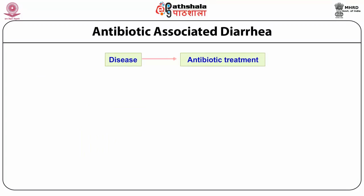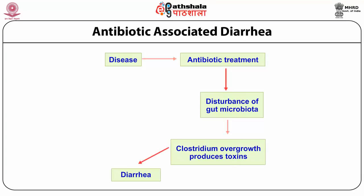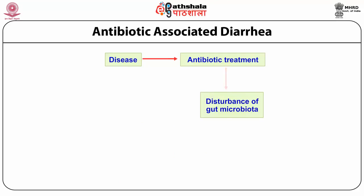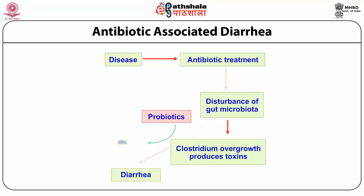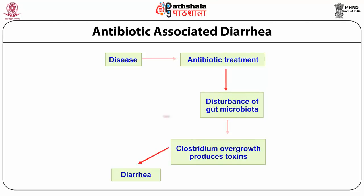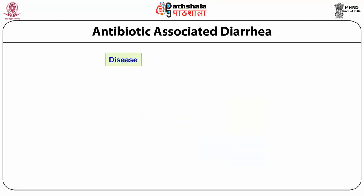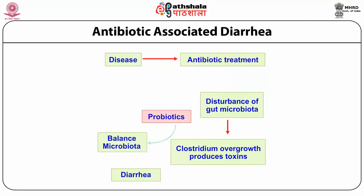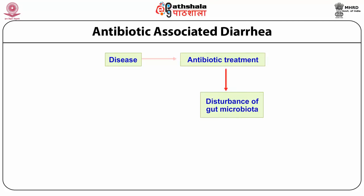A main disease addressed by probiotics is antibiotic-associated diarrhea. This occurs when contaminated food enters the body and medical treatment includes antibiotics, which disturb the gut microbiota by killing beneficial microbial flora along with pathogens. If we use probiotics, they kill the pathogenic microorganisms while also preserving our microbial flora, keeping the balance of the human body's microbial community and helping in the treatment of diarrhea.